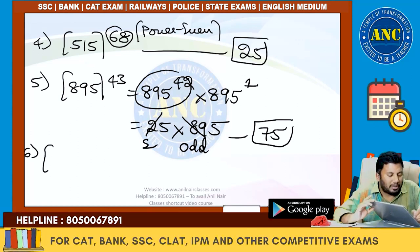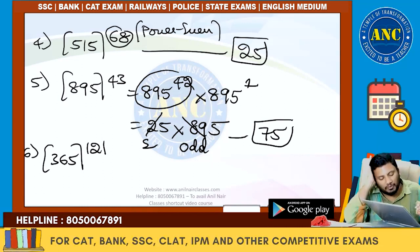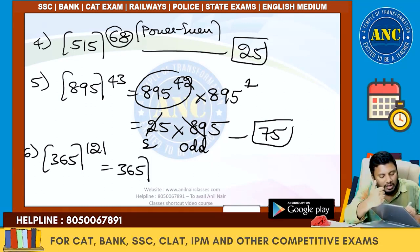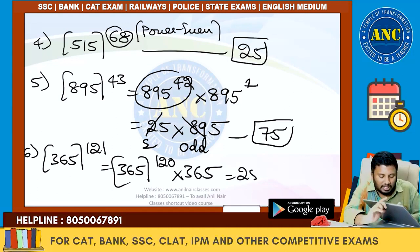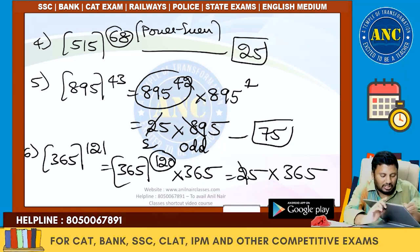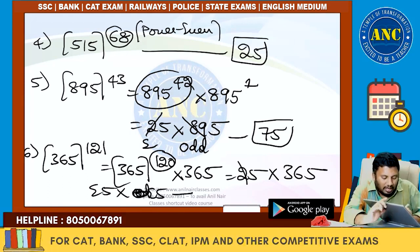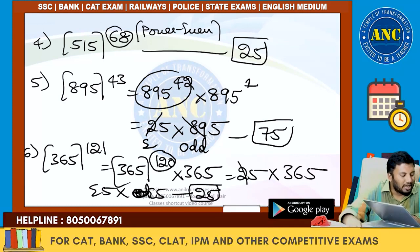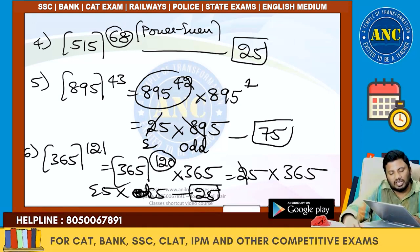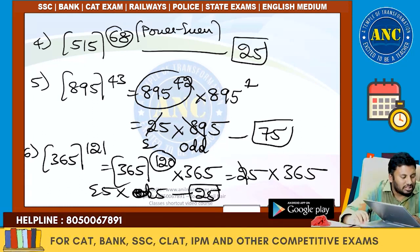When any odd power is there, you can easily solve using this logic. For example, 365^121 = 365^120 × 365. Power 120 is even, so last two digits is 25. Then 25 × 365: 2 is even, 36 is even. Even 5 into even 5 – last two digits is 25. Summary: even5 × even5 = 25; odd5 × odd5 = 25; even5 × odd5 = 75.